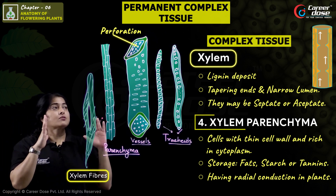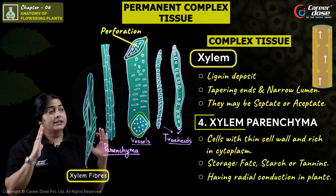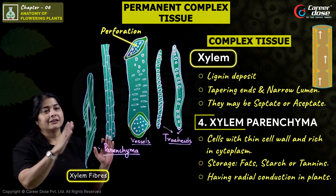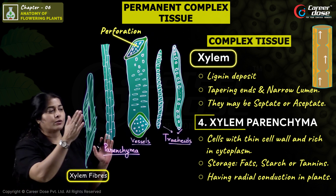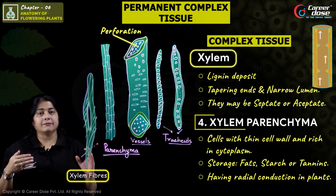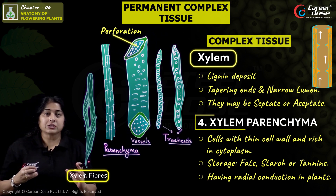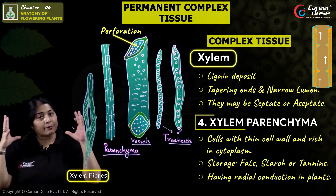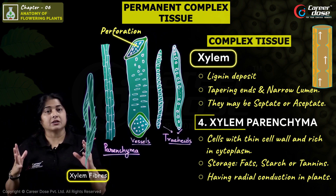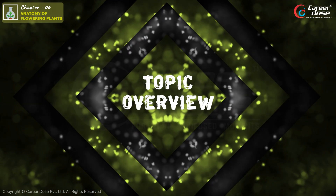So, these are the four different elements of xylem: Parenchyma, Sclerenchyma (xylem fibers), Vessels, and Tracheids. This complex tissue — xylem — is responsible for conducting water and minerals from the root to the tip of the plant.